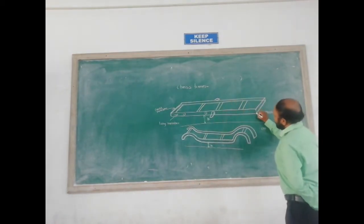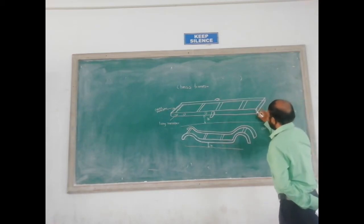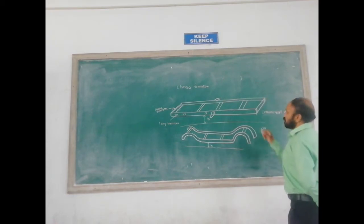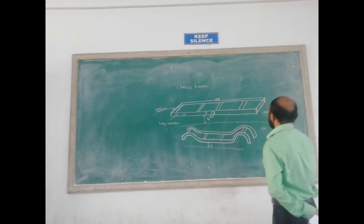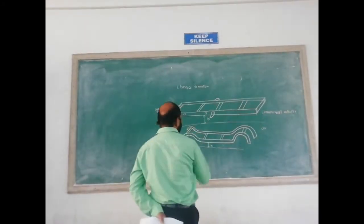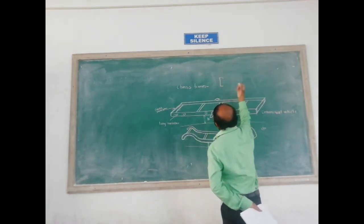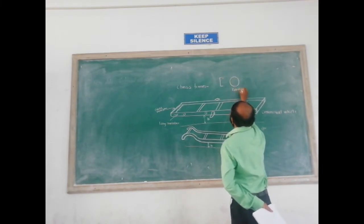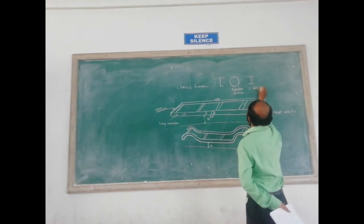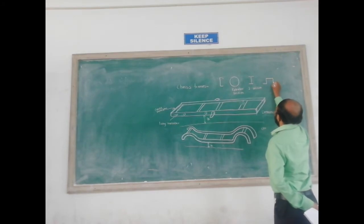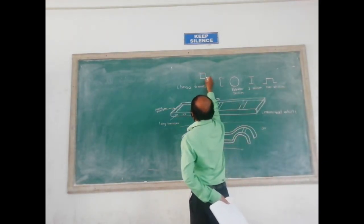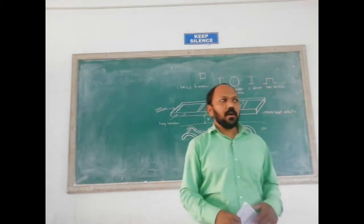If we consider the cross-section of this long member, the cross-section is generally a C-shape. A C-shape frame is provided in the case of these long members. Different types of cross-sections of long members are available: C-section, tubular section, I-section bars, hat section, and square type tubes. These are the different cross-sections used in the case of these frames.